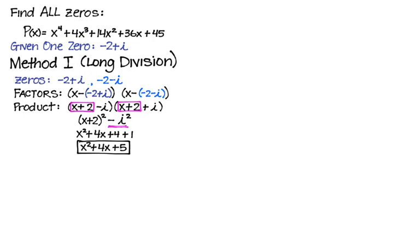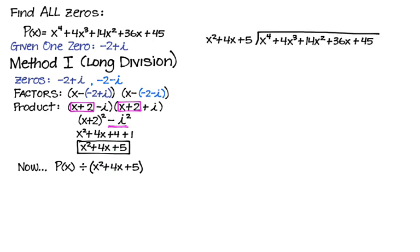Since x squared plus 4x plus 5 is a factor, we can divide by it — use it as a divisor. So we're going to take that original polynomial and divide it by the quadratic we just found, using long division.